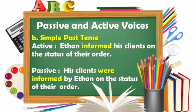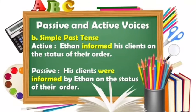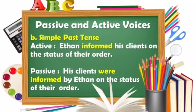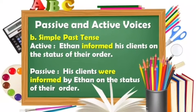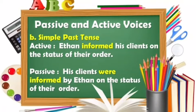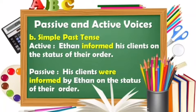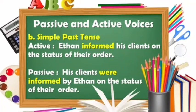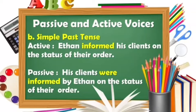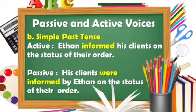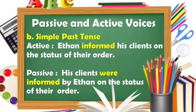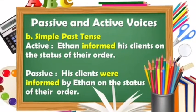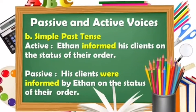Now, let us have an example in simple past tense. In active voice: 'Ethan informed his clients on the status of their order.' Ethan is the subject, informed is the action, and his clients is the object. If we transform it into passive voice: 'His clients were informed by Ethan on the status of their order.' His clients is the object, were informed is the action, and Ethan is introduced by the preposition 'by' as the subject.